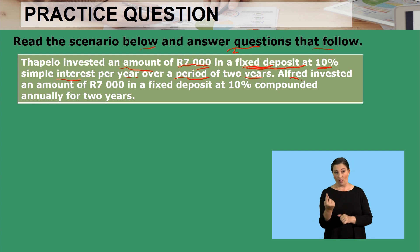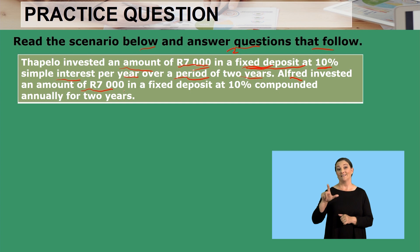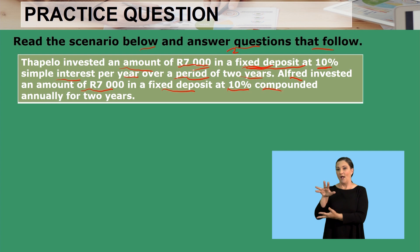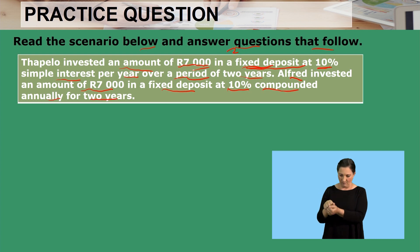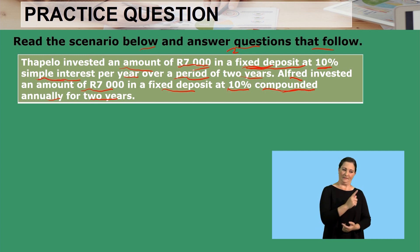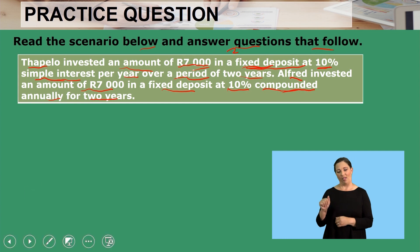We also have Alfred, who invested an amount of 7,000 in a fixed deposit as well at 10%, but compounded annually for two years. When we're talking about compounded, it has to be calculated differently from the way in which simple interest for TAPELO would be calculated.